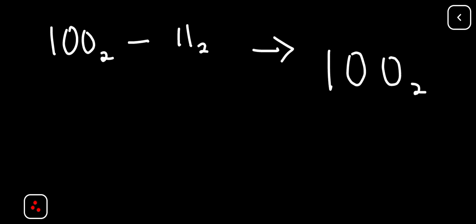Let's see what happens. This is 100 base 2 subtracting 11 base 2. Now this is 0 and it cannot subtract 1, so it borrows from 0. But 0 does not have, so 0 borrows from 1.